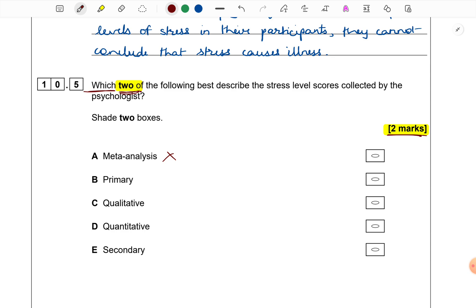Primary, are the scores primary? Certainly, they are because primary means first-hand data or first-hand information collected by researchers. Indeed, in this study, we saw that they collected information directly first-hand from teachers.